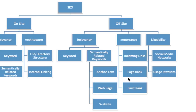Going back over off-site: we're looking at relevancy of incoming links to a particular keyword and semantically related keywords, including anchor text, the originating webpage, and the originating website. We're measuring importance via incoming links and our proprietary scoring systems similar to PageRank and TrustRank. Lastly, we're looking at likability through social media engagement and usage statistics from analytics. That wraps up our high-level overview of SEO. Hope you enjoyed the video. Thanks, bye-bye.